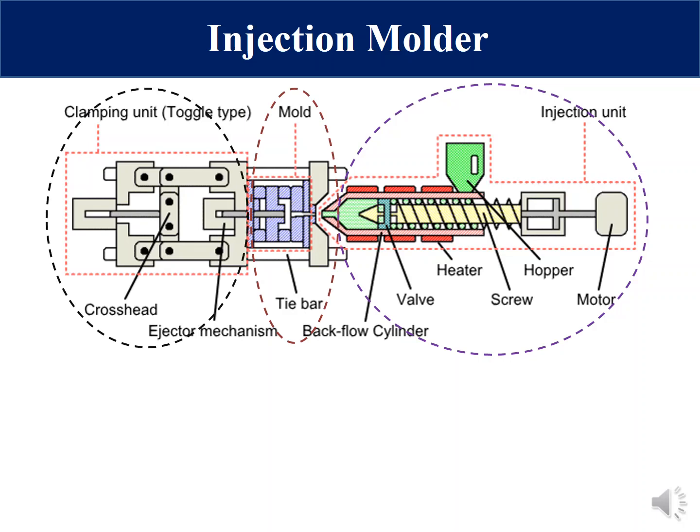Each unit consists of several parts. For example, the injection unit consists of motors, hopper, screw, heating element, valve, and others. Each unit performs a specific task during the injection molding cycle. The task of the injection unit is melting the polymer and then injecting it into the mold cavity. The mold performs two main tasks: it provides shape to the product and helps cool the molten polymer into a solid product.